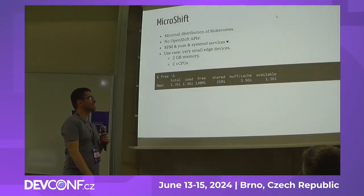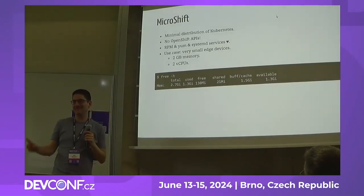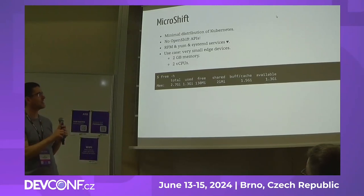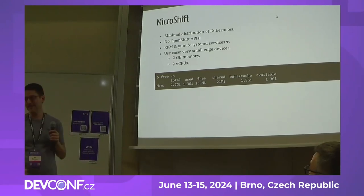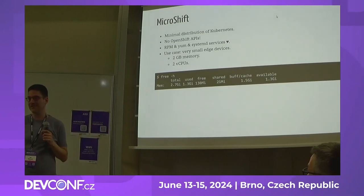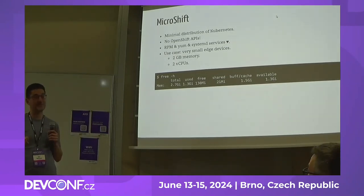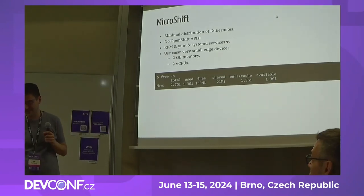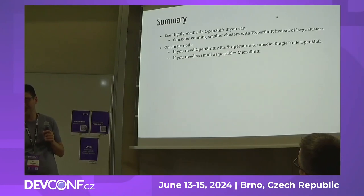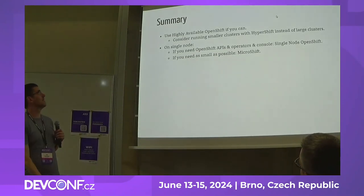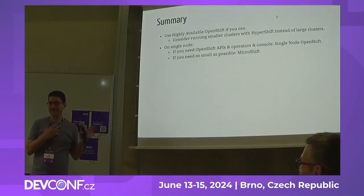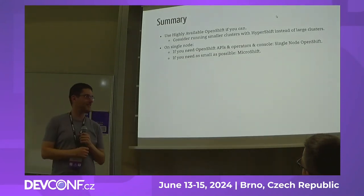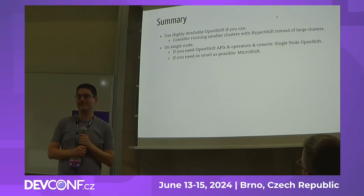Finally, we have MicroShift. It's not OpenShift — it's a minimal Kubernetes distribution. It just runs the Kubernetes API server, etcd, and so on. It's installed by RPM and YUM and runs as a systemd service. Unfortunately, no time to cover that in detail — I'll be here if you have any questions after the talk.